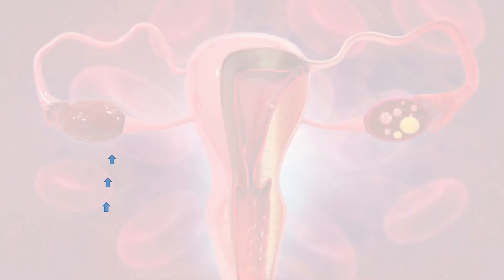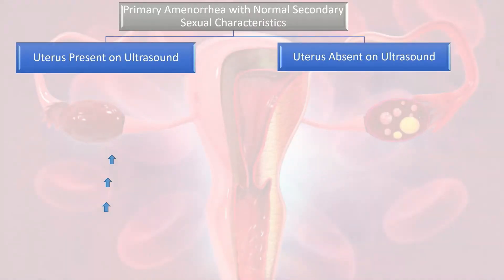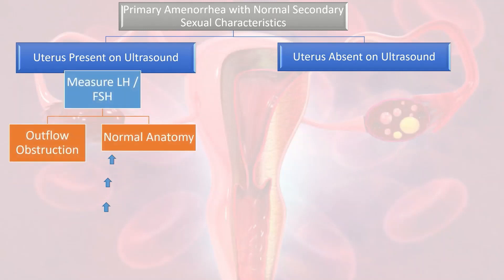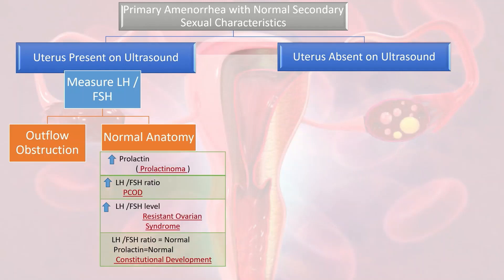In patients with primary amenorrhea and normal secondary sexual characteristics, ultrasound is performed first. If the uterus is present, LH and FSH levels are measured. Outflow obstruction may be present in one group. Normal anatomy with increased prolactin indicates prolactinoma; high LH/FSH ratio indicates polycystic ovarian disease; high LH and FSH levels indicate resistant ovarian syndrome; normal LH/FSH and normal prolactin indicate constitutional delay.